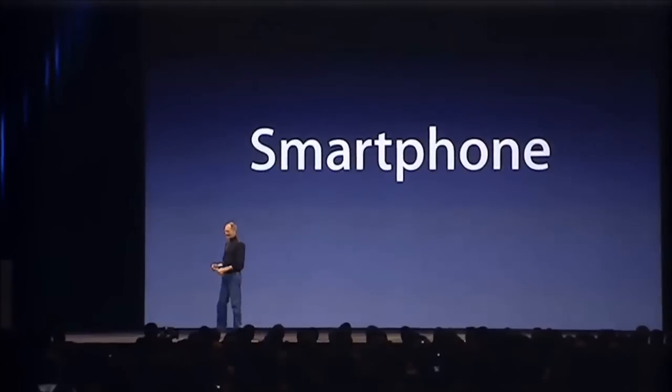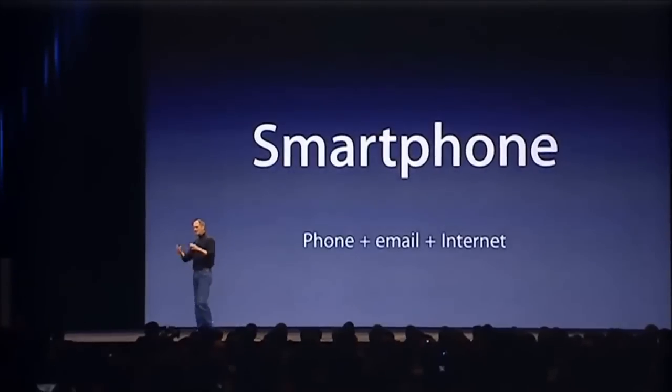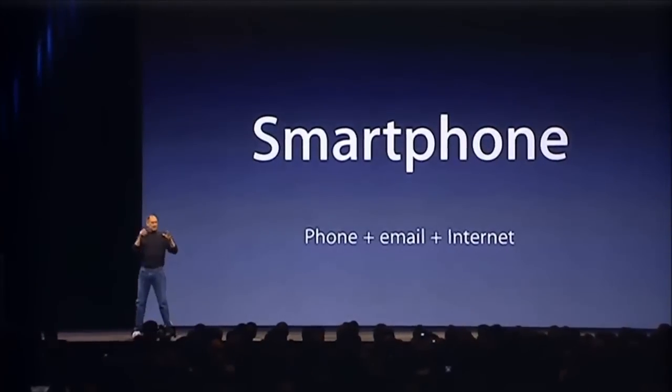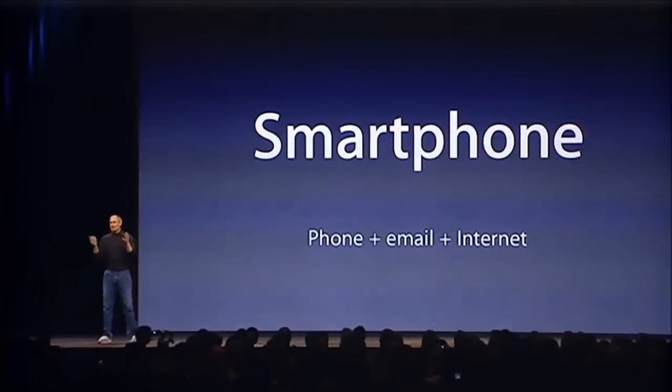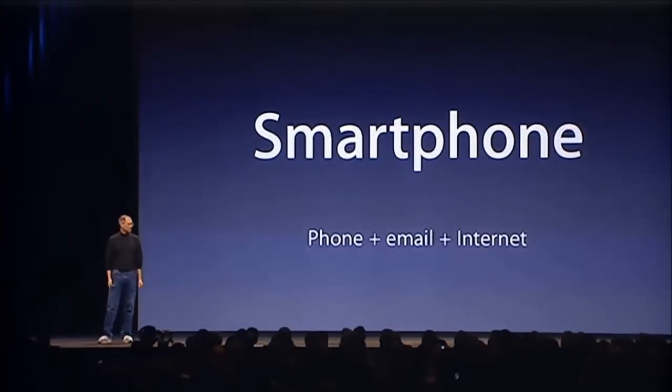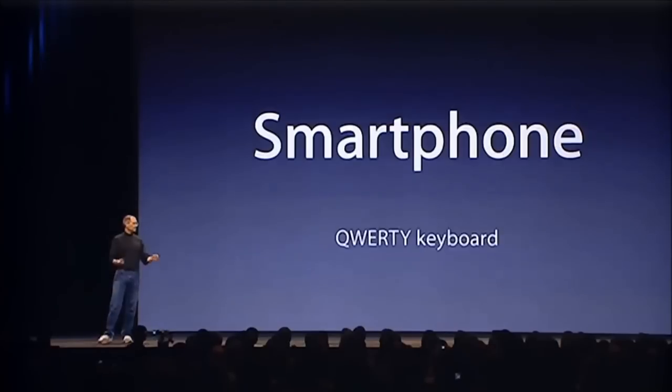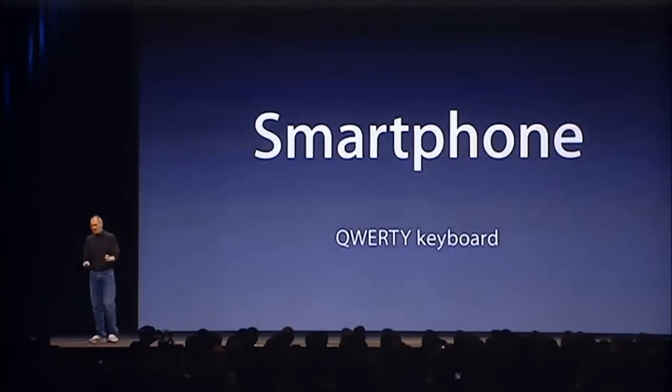Let me talk about a category of things. The most advanced phones are called smartphones, so they say, and they typically combine a phone plus some email capability plus they say it's the internet — or the baby internet — into one device. And they all have these plastic little keyboards on them, and the problem is that they're not so smart.